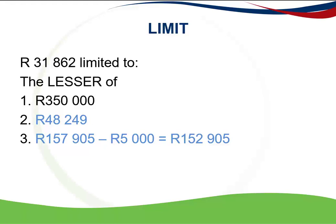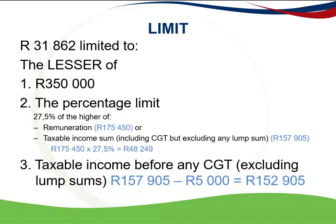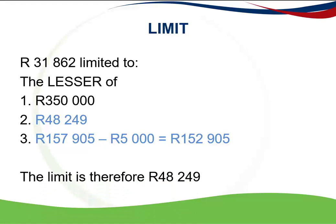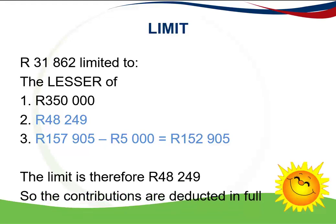We now compare the three amounts: R350,000, the percentage limit of R48,249, and the taxable income excluding capital gains of R152,905. The lesser of those three is R48,249, which becomes the limit — the most the taxpayer can deduct in the current year of assessment. Since the total contributions are only R31,862, they will be deducted in full.